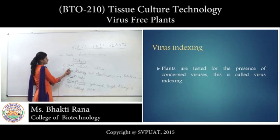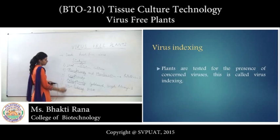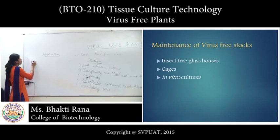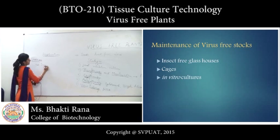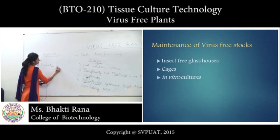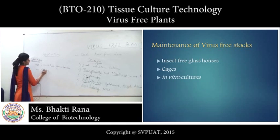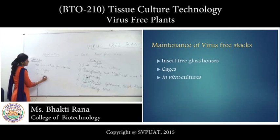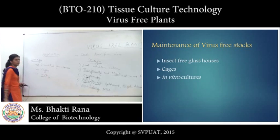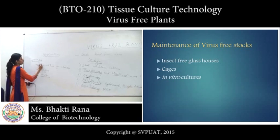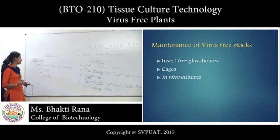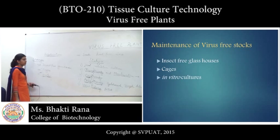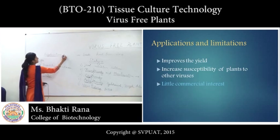These are the important techniques for making virus-free plants: shoot meristem culture, thermotherapy, cryotherapy, chemotherapy, and virus indexing. Next comes storage — you can store plants in insect-free greenhouses, or you can use cages, or best of all, you can preserve them in vitro. In vitro is the most important storage technique because contamination is very limited, so in vitro plants will be more virus-free.